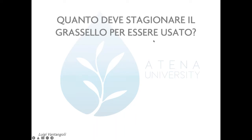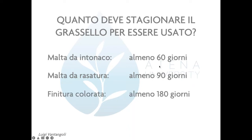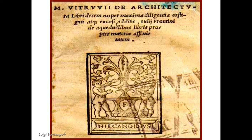Quanto deve stagionare il grassello? Per esperienza di trent'anni: per la malta da intonaco almeno 60 giorni; per un rasante non colorato almeno 90 giorni; per una finitura colorata — tinta a calce, intonacchino o marmorino — almeno 180 giorni, perché prima la calce mantiene causticità e potrebbe aggredire i pigmenti moderni, che non resistono come quelli storici. Per il restauro conservativo uno o due anni; Vitruvio prevedeva sette anni di stagionatura.